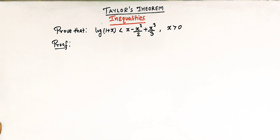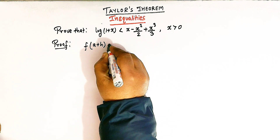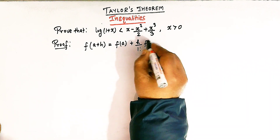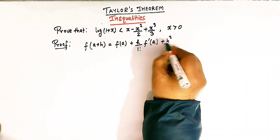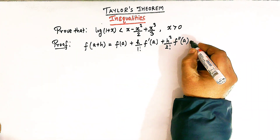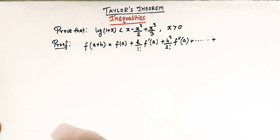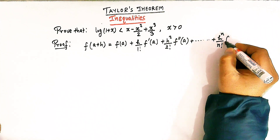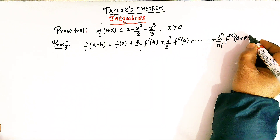Taylor's theorem is given by the series: f(a + h) = f(a) + h/1! times the first derivative of f at point a, then h squared over 2! times the second derivative of f at point a, and so on. The remainder term, also known as Lagrange's form of remainder, is written as h raised to n divided by n factorial times the nth derivative of f at the point (a + θh).